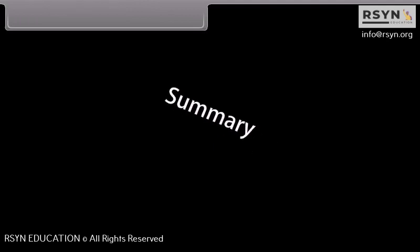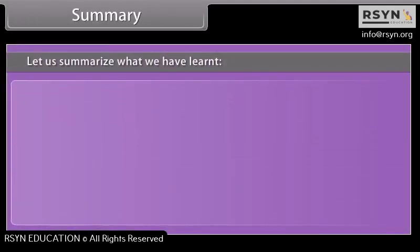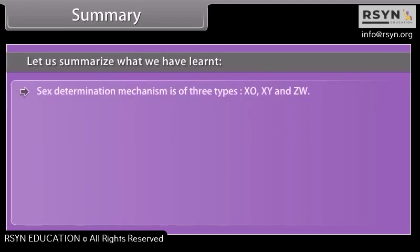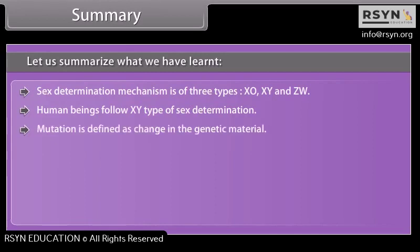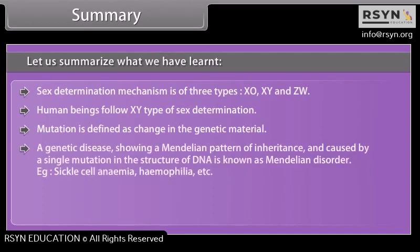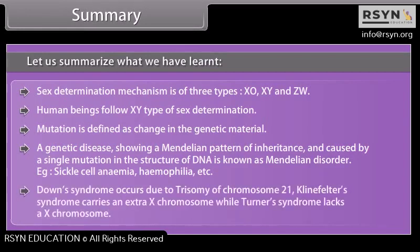Summary. Sex determination mechanism is of three types: XO, XY, and ZW. Human beings follow the XY type of sex determination. Mutation is defined as a change in the genetic material. A genetic disease showing a Mendelian pattern of inheritance and caused by a single mutation in DNA is known as a Mendelian disorder — for example, sickle cell anemia and hemophilia. Down syndrome occurs due to trisomy of chromosome 21. Klinefelter's syndrome carries an extra X chromosome, while Turner's syndrome lacks an X chromosome.